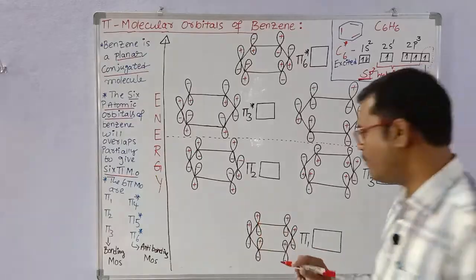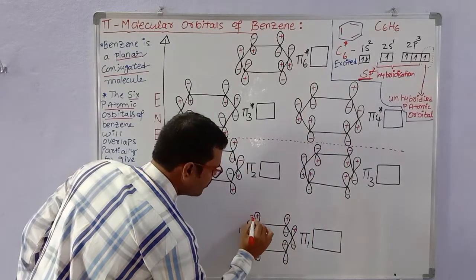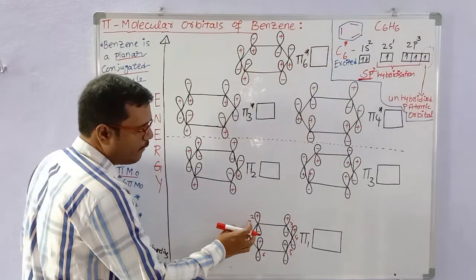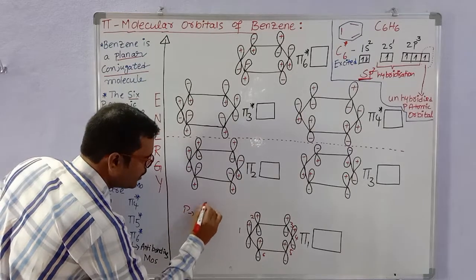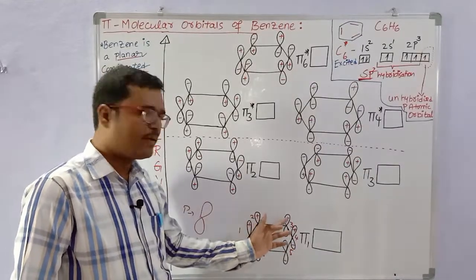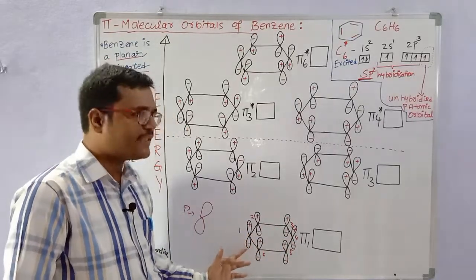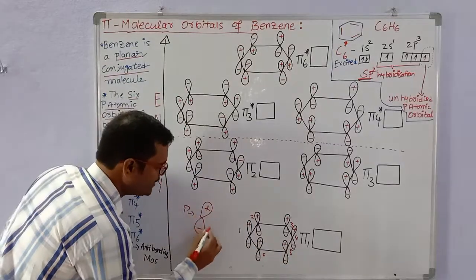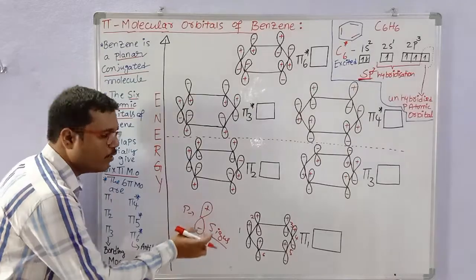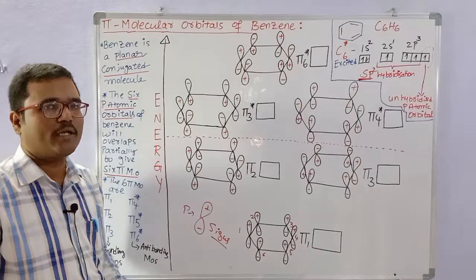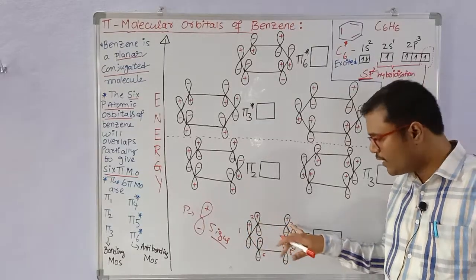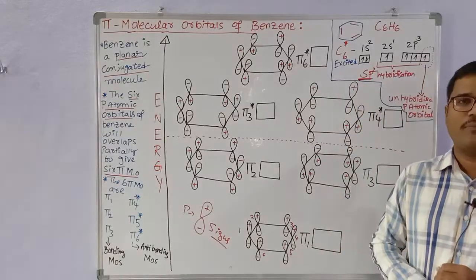To show the pi1 molecular orbital formation, we number the 6 carbon atoms clockwise as 1, 2, 3, 4, 5, 6. The p atomic orbitals have a dumbbell shape with a top lobe and a bottom lobe. In pi1, all 6 top lobes have the same plus sign and all 6 bottom lobes have the same minus sign — this is in-phase overlap giving the lowest energy bonding molecular orbital.